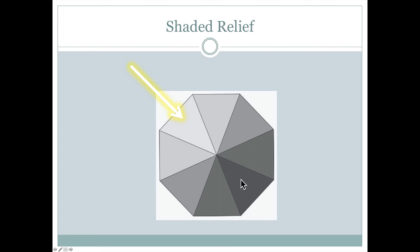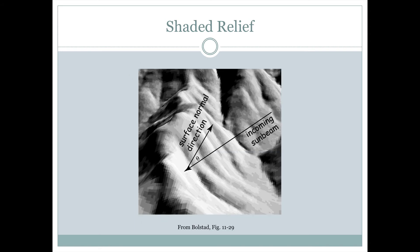The darkest portion of the umbrella would be on the other side — the part that is still receiving some light, but that light is not bouncing directly off of it. And that's the way that we calculate shaded relief.